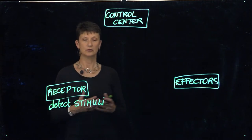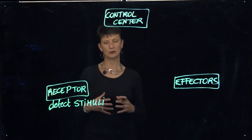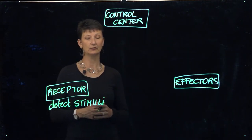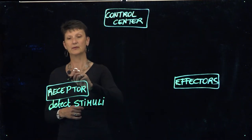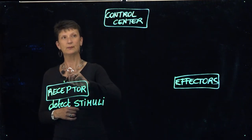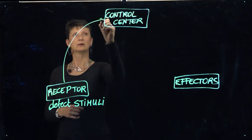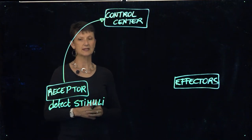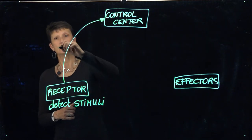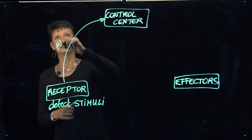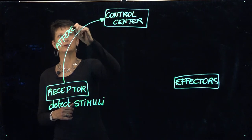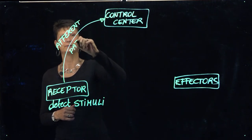This environment could be an internal environment or an external environment. For instance, food arriving in your stomach causing your stomach to stretch would be an example of an internal stimulus. Receptors communicate with the control center via a pathway we will be referring to as the afferent pathway.